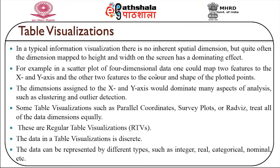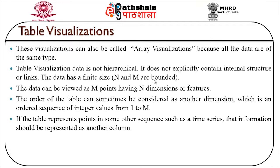Some table visualizations such as parallel coordinates, survey plots or radial visualization treat all of the data dimensions equally. These are also called regular table visualizations or RTVs. The data in a table visualization is usually discrete and can be represented by different types such as integer, real, categorical, nominal, etc. These visualizations are also called array visualizations because all the data in that table are of the same data type.